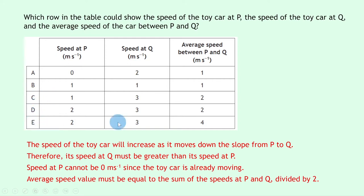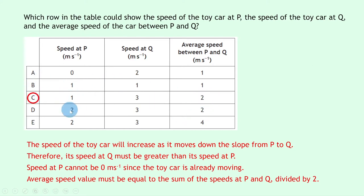The average speed must equal the sum of speeds at P and Q divided by 2. We can rule out B since it shows equal speeds at P and Q, and rule out A since speed at P cannot be zero. For option C: 1 + 3 = 4, divided by 2 gives 2 metres per second, which matches. For D and E: 2 + 3 = 5, divided by 2 gives 2.5 which rounds to 3, not matching. So the answer is C.